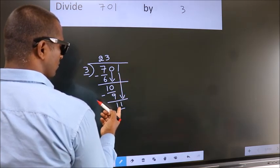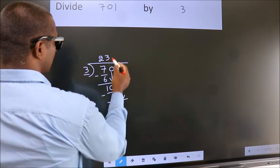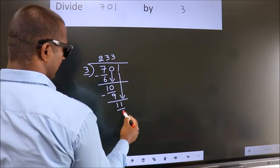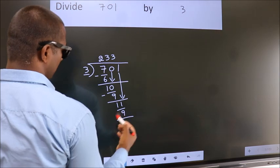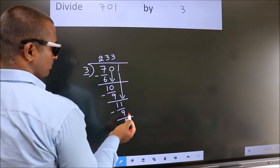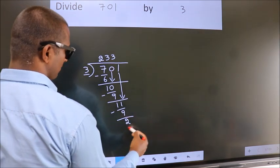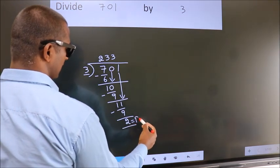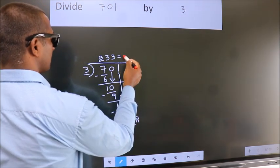A number close to 11 in 3 table is 3 times 3 is 9. Now we subtract. We get 2. No more numbers to bring it down. So we stop here. This is our remainder. This is our quotient.